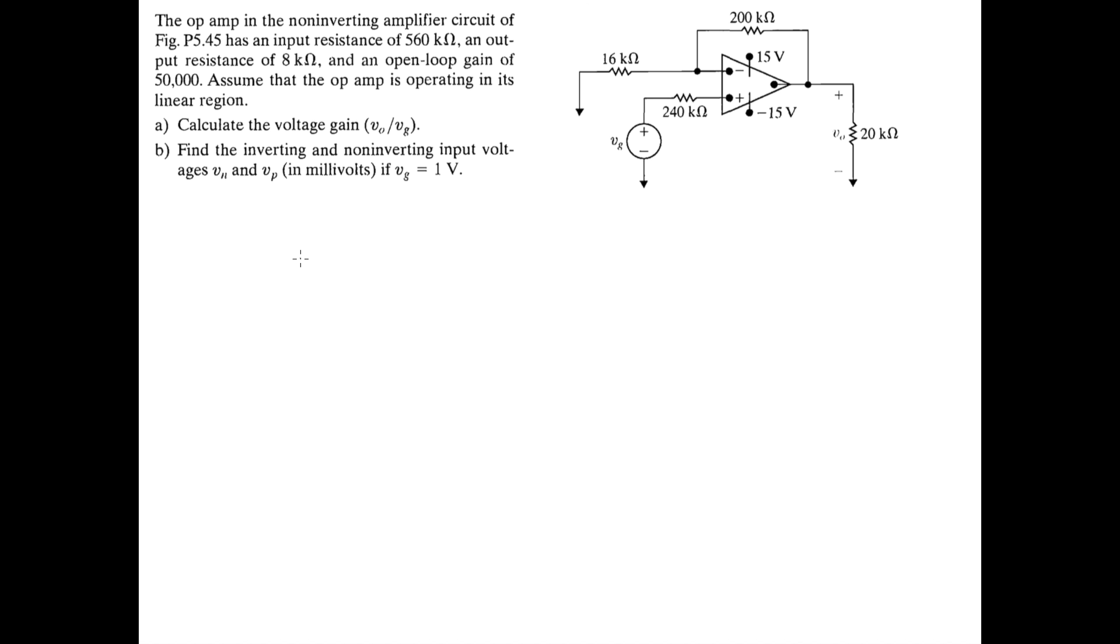Before we jump into this problem, I'm just going to kind of redraw the circuit that is originally given to us in this problem, because they don't show a few things that are key in solving this problem, namely the input resistance, the output resistance, and the open loop gain.